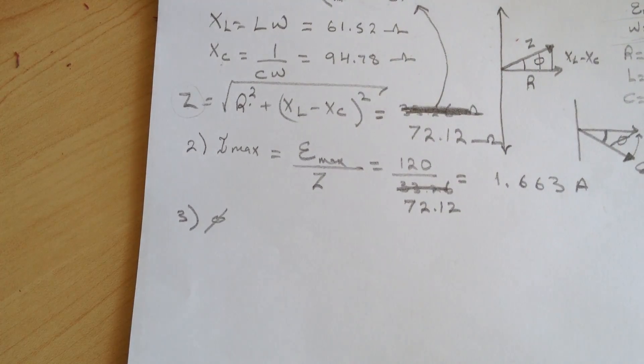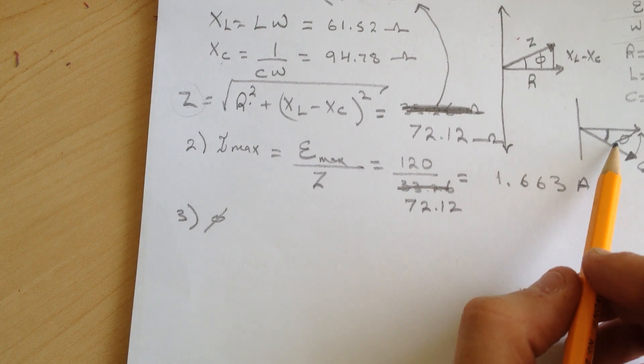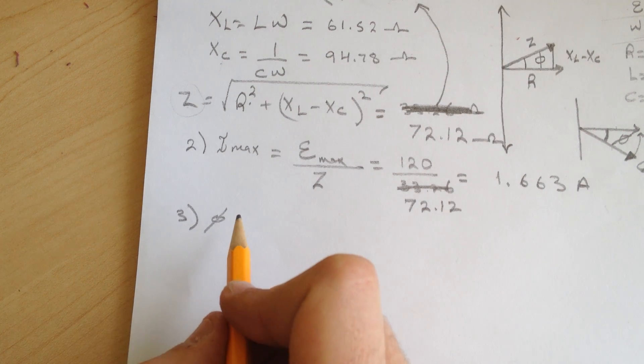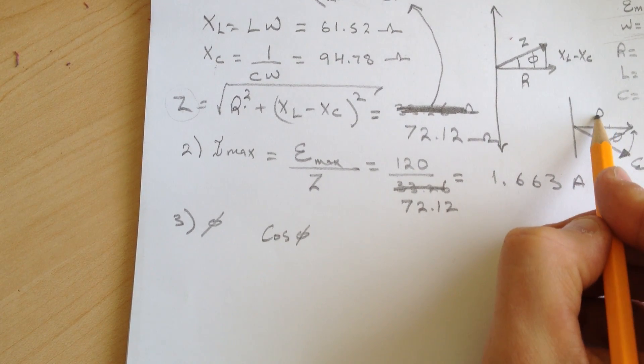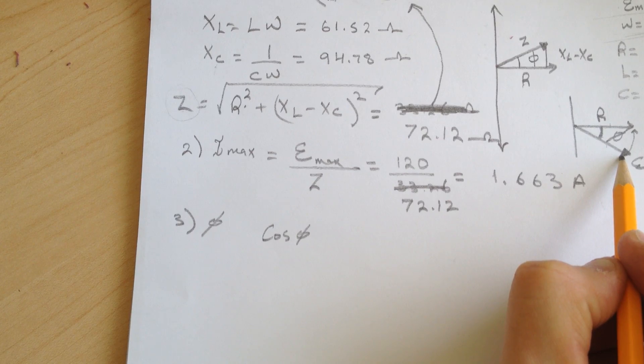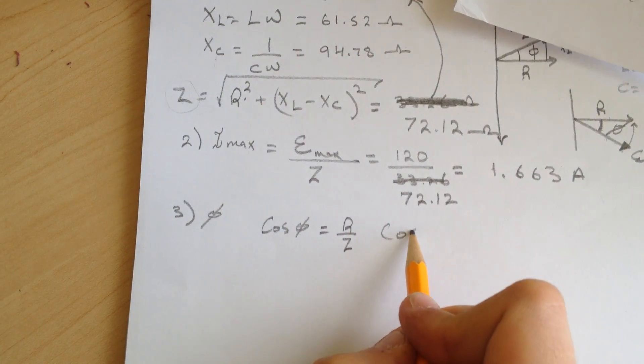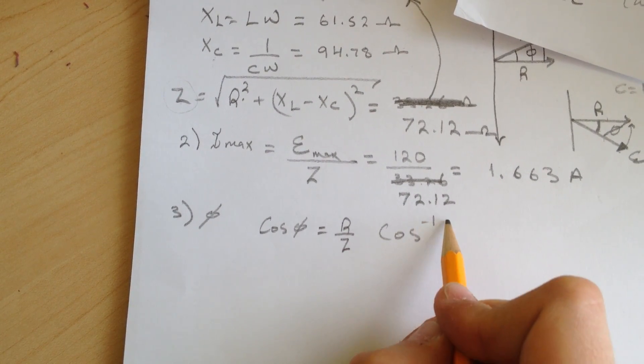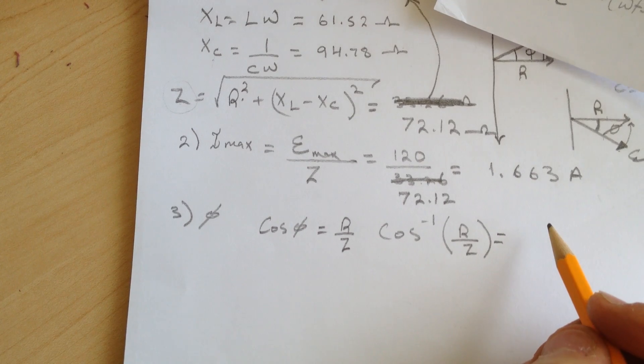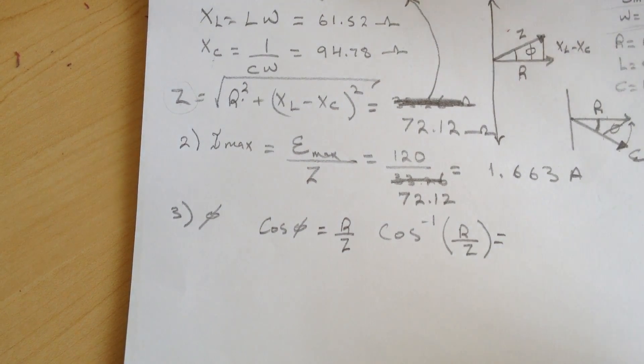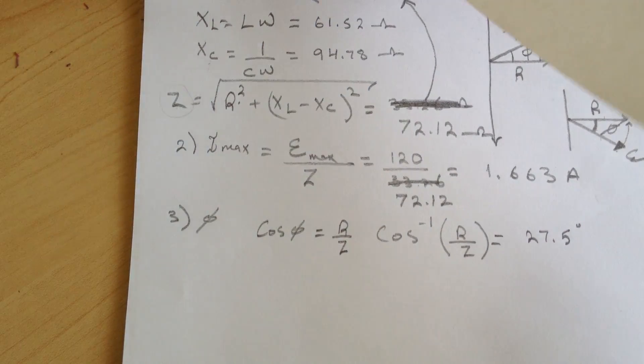So the angle between these two we can find it by just doing the cosine. So cosine phi is the R over the Z. R over Z, just take the cosine inverse R over Z and you'll get, well, my number I got, it was 27.5 degrees.